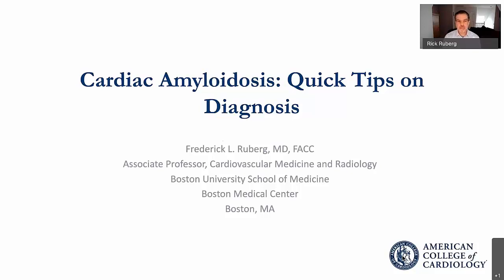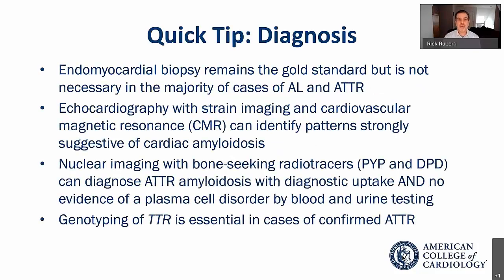For the next 10 to 15 minutes, we'll talk about endomyocardial biopsy as the gold standard for cardiac amyloidosis, which is necessary in a vanishing minority of cases of AL and ATTR amyloidosis. We'll talk about echocardiography and strain imaging and its specific pattern to suggest cardiac amyloidosis, nuclear imaging — which has really revolutionized our diagnosis of ATTR amyloidosis — and genotyping to determine whether ATTR amyloidosis is hereditary or wild type.